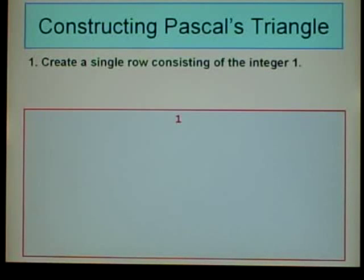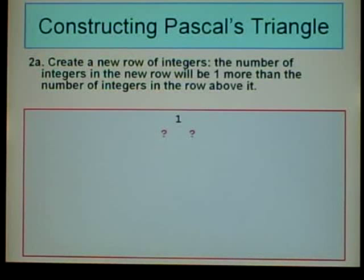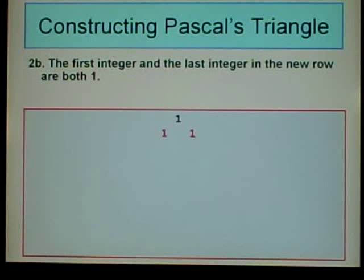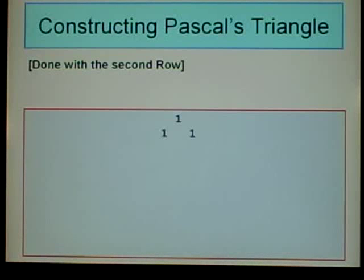Now we'll see that algorithm in use. Step 1: Create a single row consisting of the integer 1. We're done with the first row. Now we repeat steps A, B, and C as many times as needed. For the second row, since there is one integer in the first row, the second row will have two integers. The first and last integers are both 1, so both slots are assigned 1. There are no remaining integers to fill in, so we're done with the second row of Pascal's Triangle.